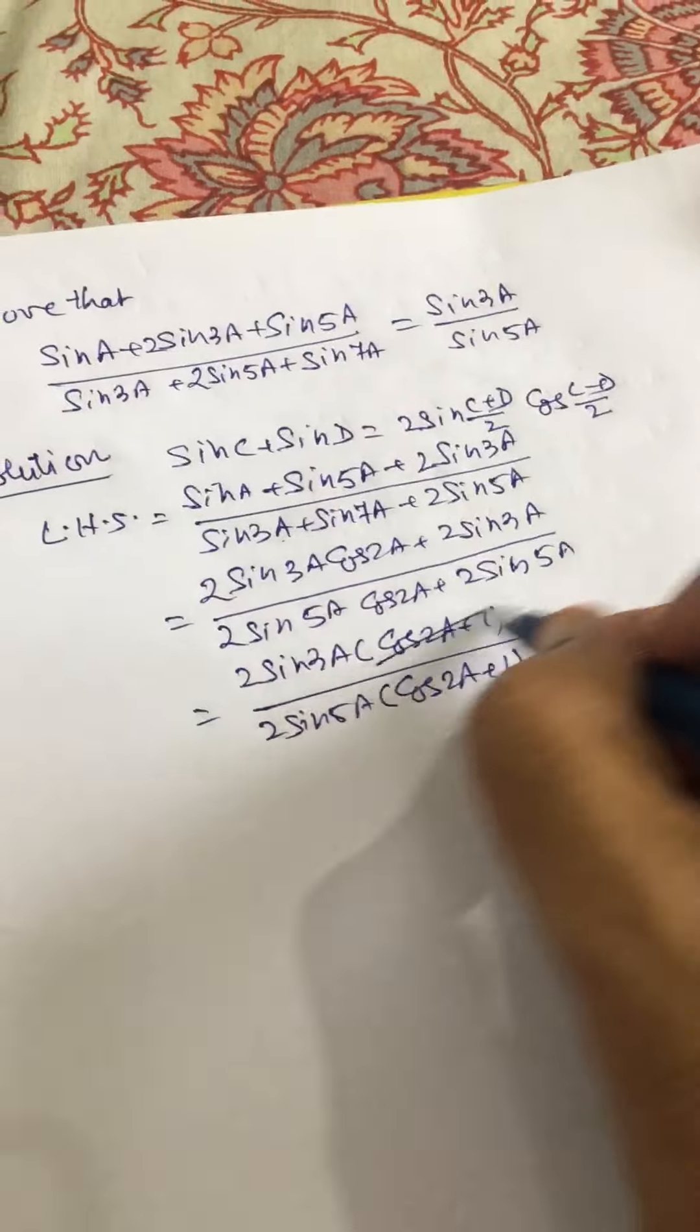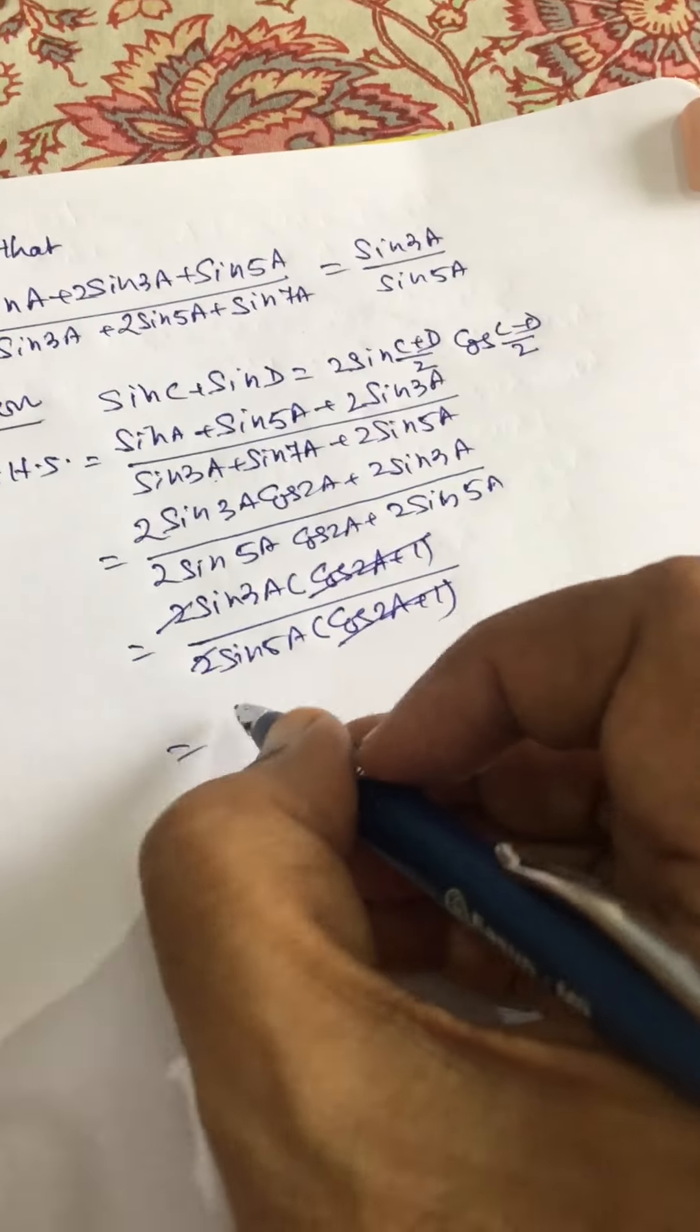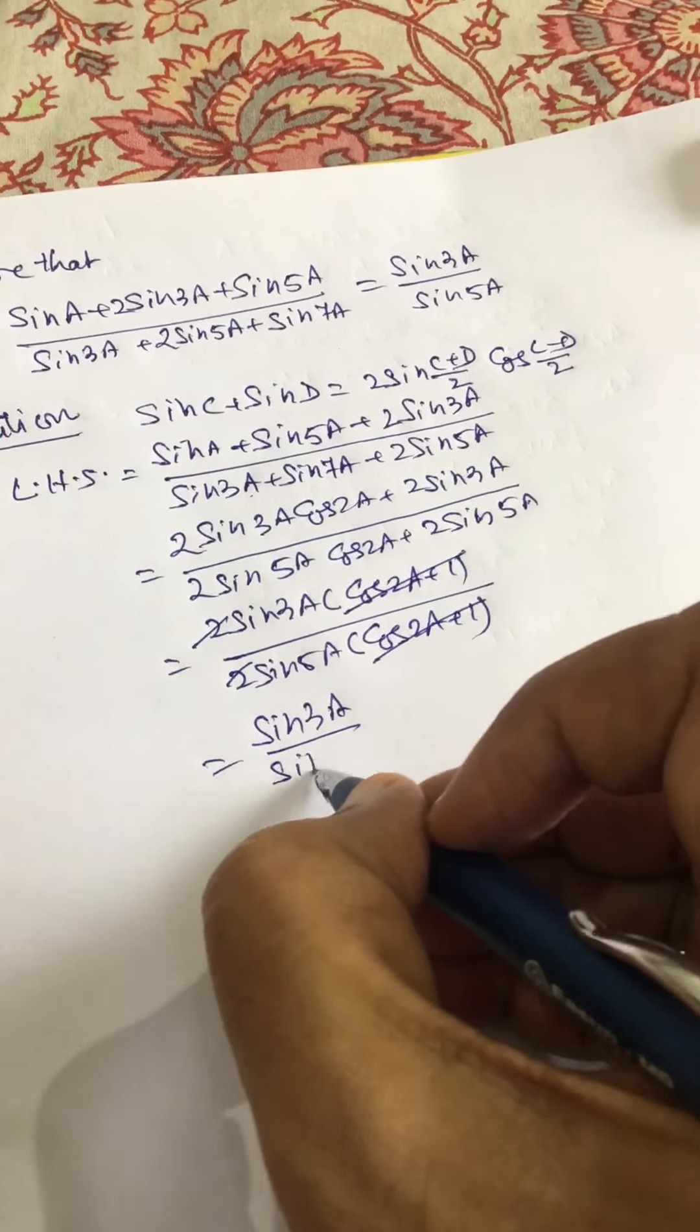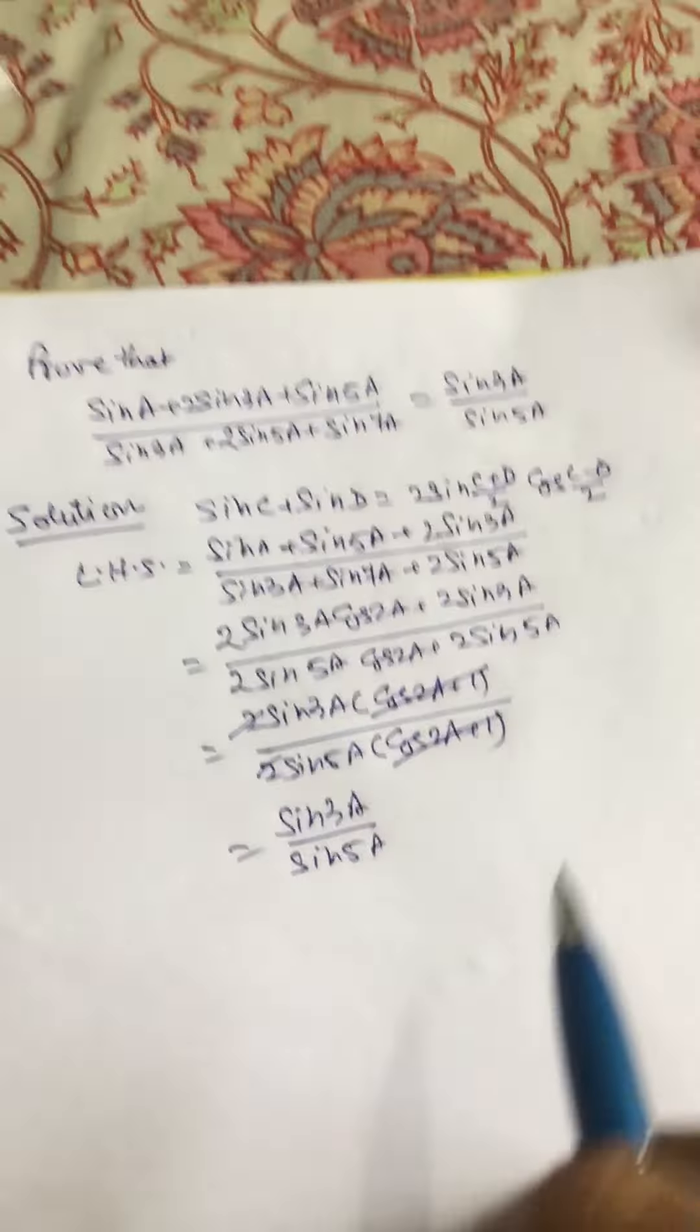This cancels with this, this cancels with this, we are left with sin 3A divided by sin 5A.